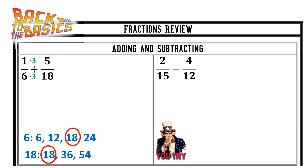I'm going to multiply 1/6 by 3 on top and bottom. In order to get that 6 to become an 18, I need to multiply it by 3. That's going to give me 3/18 — 3 times 1 is 3, 6 times 3 is 18. I already have a denominator of 18 with 5/18, so I could think of it as multiplying by 1, or just not doing anything to it. Now that I have common denominators, I just need to look at my numerators — just add or subtract whatever's up top. 3 plus 5 gives me 8. The common denominator is also the final denominator. Notice I did not add 18 plus 18; I only add or subtract my numerators.